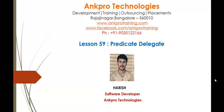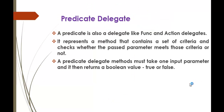Hello, welcome to lesson 59: Predicate Delegate, brought to you by AngPro Technologies. My name is Arish. In this session we are going to learn the predicate delegate. A predicate is also a delegate, like Func and Action delegate. It represents a method that contains a set of criteria and checks whether the passed parameter meets those criteria or not. Predicate delegate methods must take one input parameter and always return a boolean value — true or false.